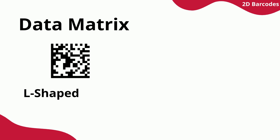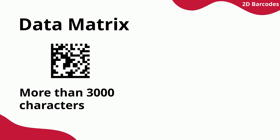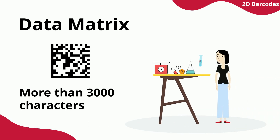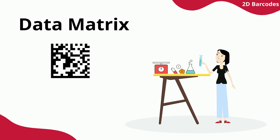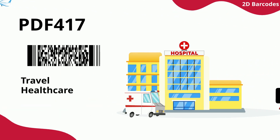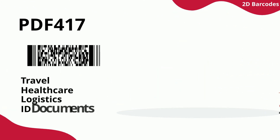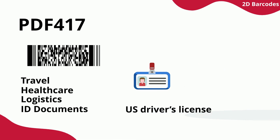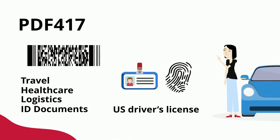The L-shaped Data Matrix code, depending on its size, can store more than 3000 characters and is generally used in the pharmaceutical industry. PDF417 codes are multiple 1D barcodes stacked on top of each other, with the information encoded in the middle section. These codes can be found in the travel, healthcare, and logistics industries, and in ID documents.